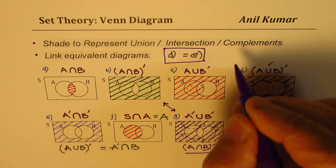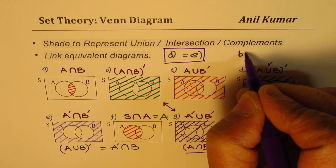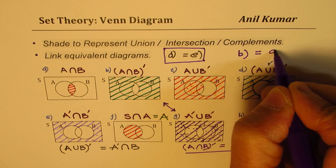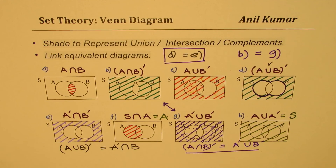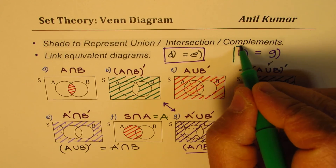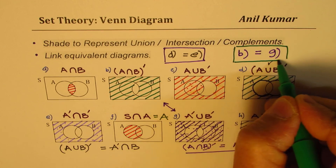We find that diagram B is basically equal to diagram G. That is another relation you see from these shaded Venn diagrams.